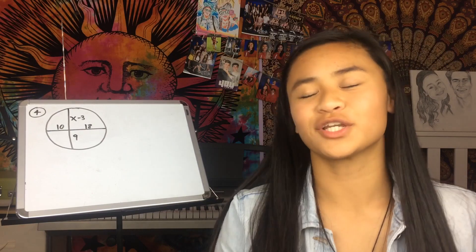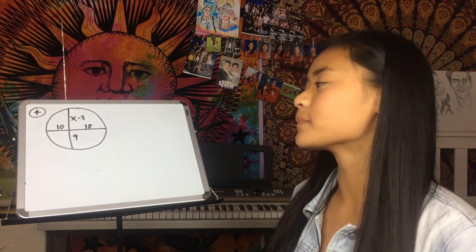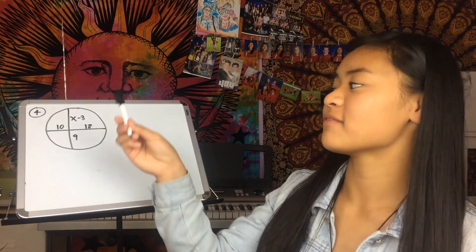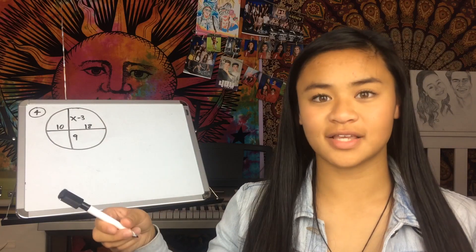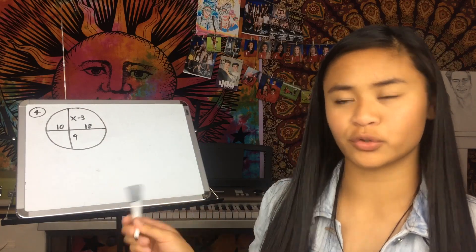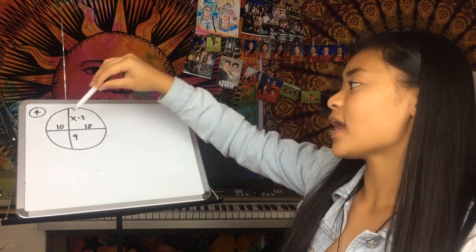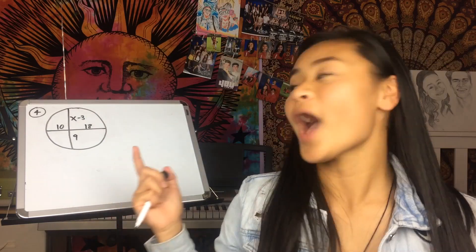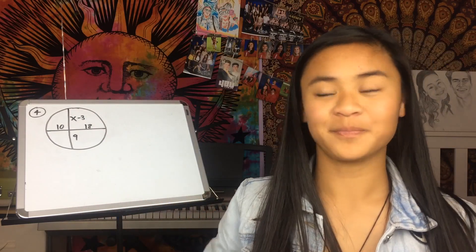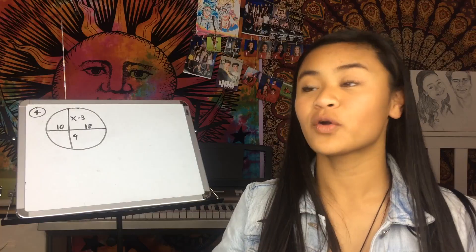Alright, next is question number four. Again, I have a circle with intersecting lines in the interior. The segments on one line are x minus 3 and 9, and the segments on the other line are 10 and 18. How do we start this problem? You use the Segments of Chords Theorem again — great!